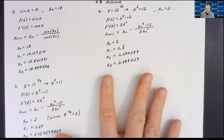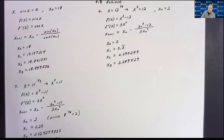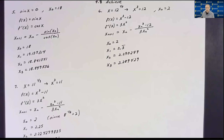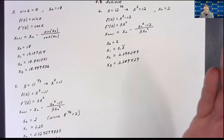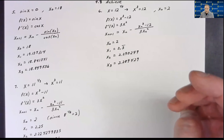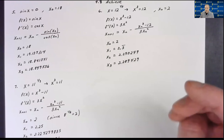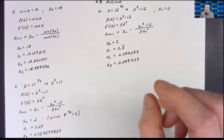Now looking at the remaining problems. Problem five is pretty easy — the function is f(x) = sin(x) set equal to zero. We're trying to find one of the roots. Sine of x equals zero at many places: at zero and every multiple of pi thereafter. We're finding the root nearest the initial guess of 18.